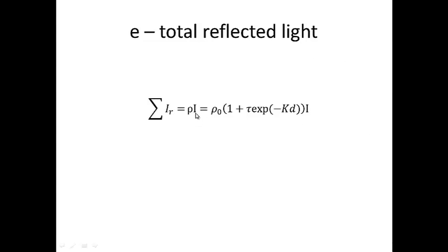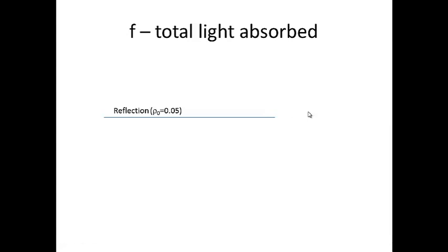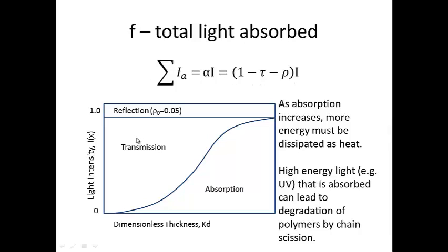We can also calculate the total reflected light. The total reflected light is equal to rho times the initial intensity, where rho is the fraction of light reflected from all transmissions from the original surface. This equals rho naught times 1 plus tau times the exponent of negative kd, times the initial intensity of light. We can also determine the total light absorbed: the sum of I sub A equals alpha times I, which equals 1 minus tau minus rho times I, where tau is the coefficient of transmission and rho is the coefficient of reflected light.